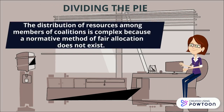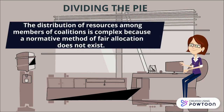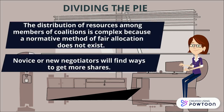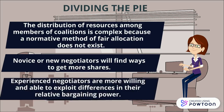Dividing the pie: the distribution of resources among members of a coalition is complex because a normative method of allocation does not exist. New negotiators will find ways to get more share, while experienced negotiators are more ready and able to exploit differences in bargaining power.